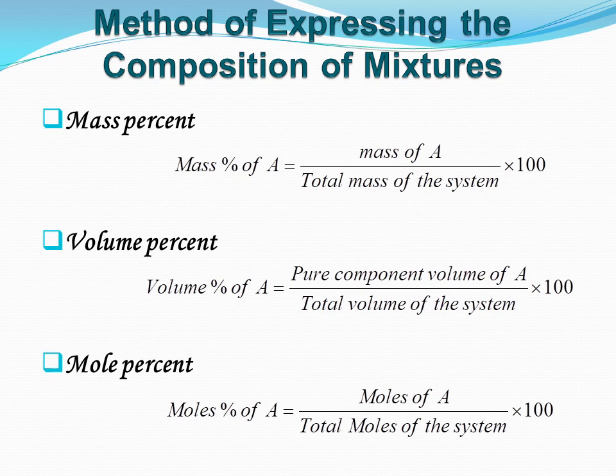The compositions can be expressed in mass percent, volume percent, and mole percent. Mass percent is the mass of any component expressed as the percentage of total mass of the system. Volume percent is the pure component volume of any component expressed as the percentage of the total volume of the system. Mole percent is the moles of any component expressed as the percentage of the total moles of the system.